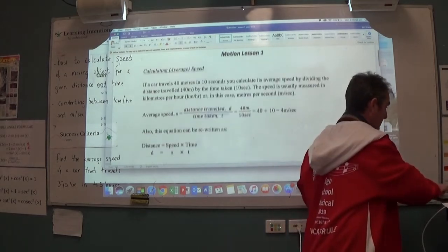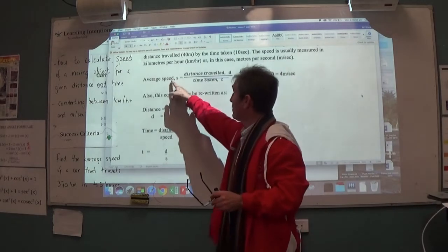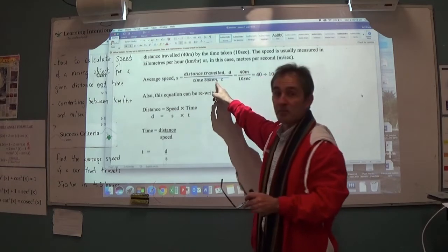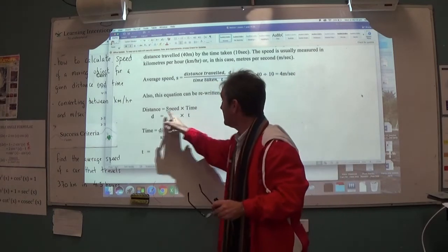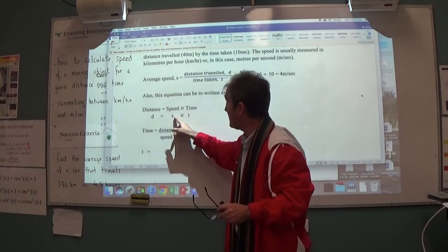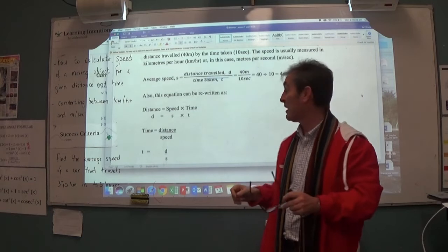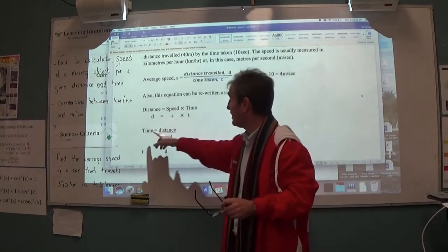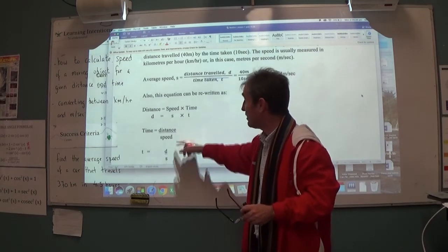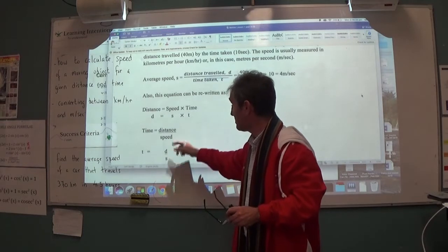To show you further down here, as an equation, this speed equation can be written also in different forms. Speed is distance divided by time. Also, distance is speed times time. Notice here I'm using these variables: D for distance, S for speed and T for time. I might also find myself being asked questions where I need to calculate time taken. In this case, to find the time, I need to go distance divided by speed. And you can see the same variables: T for time, D for distance and S for speed.